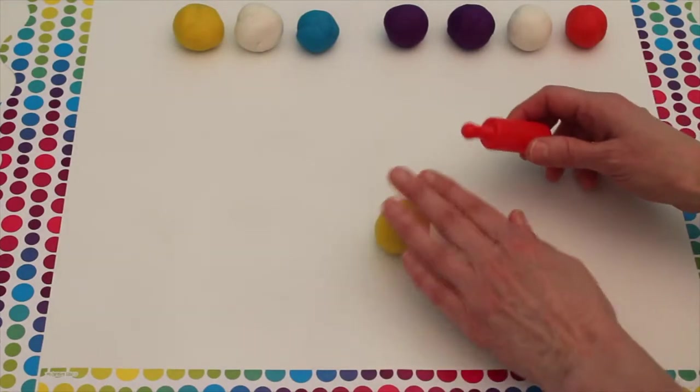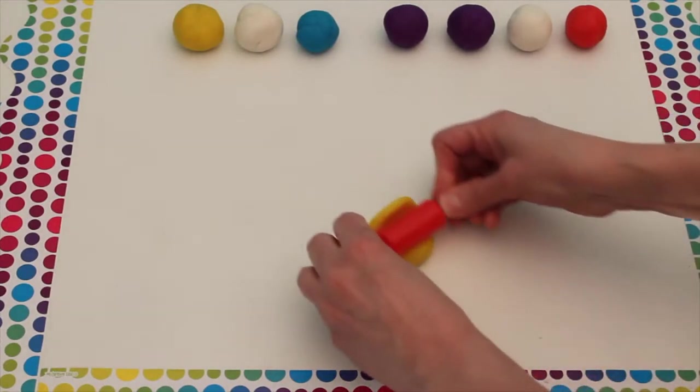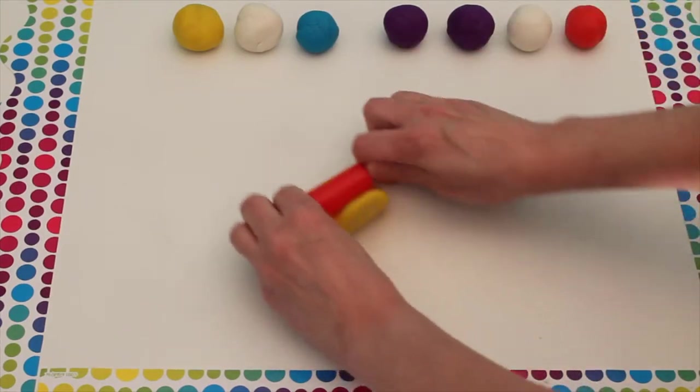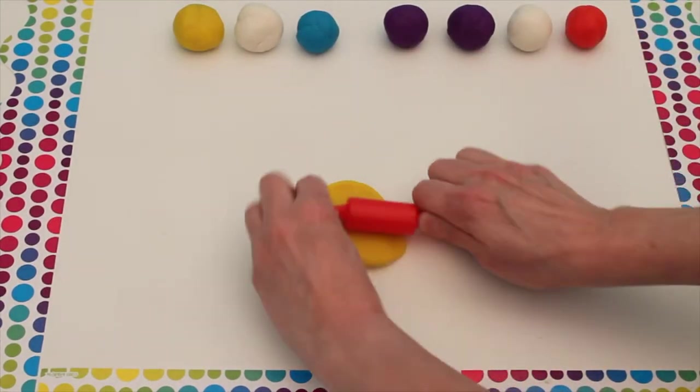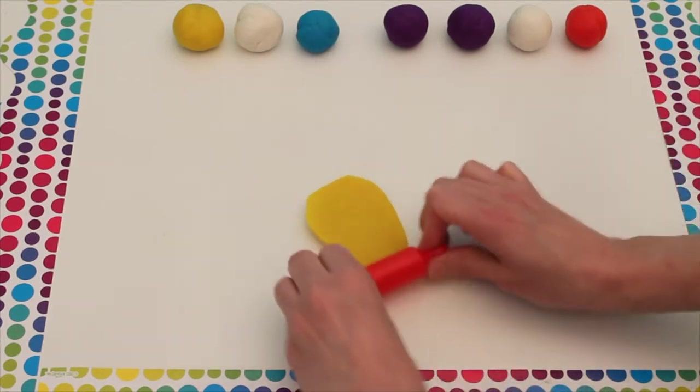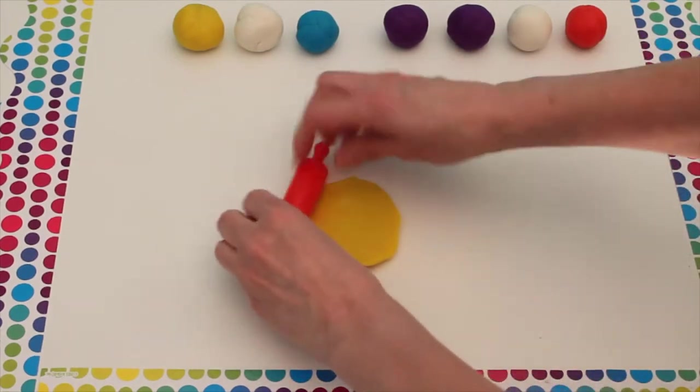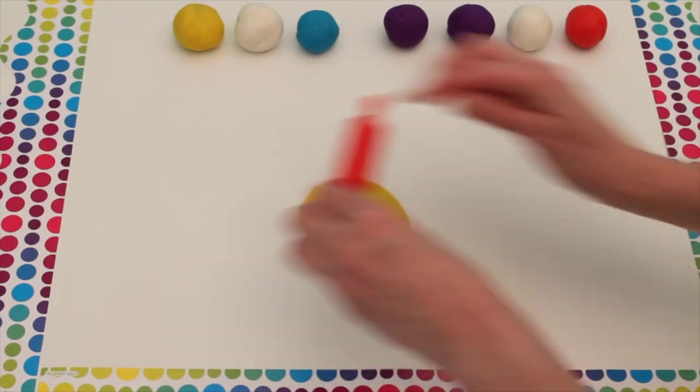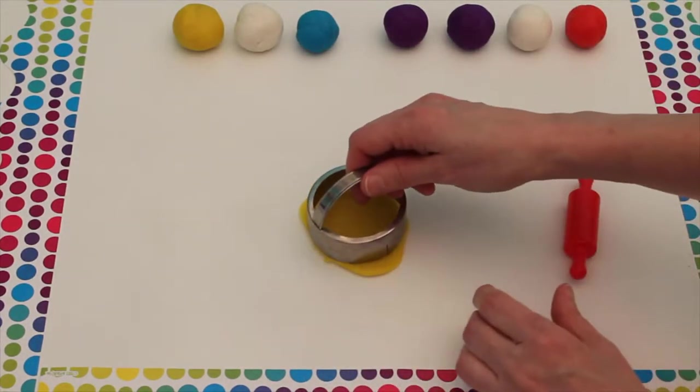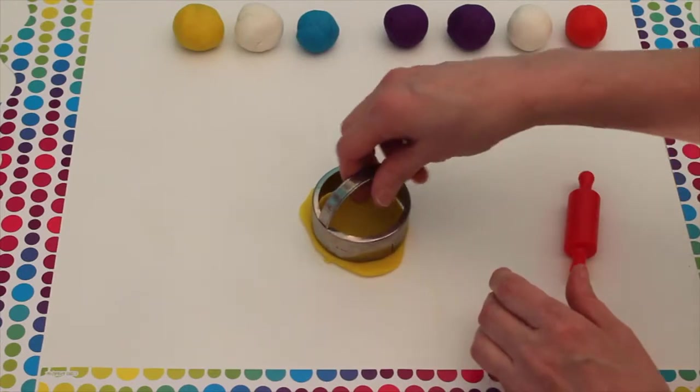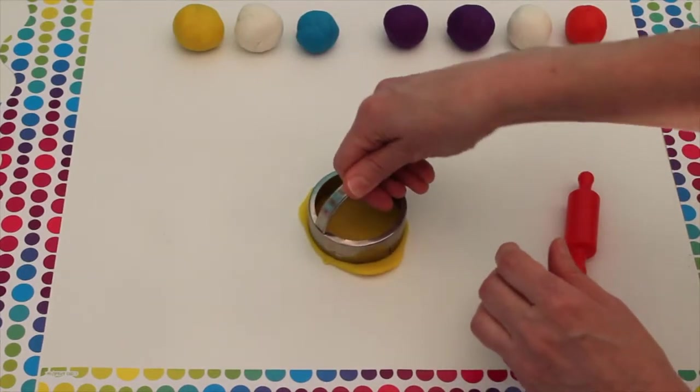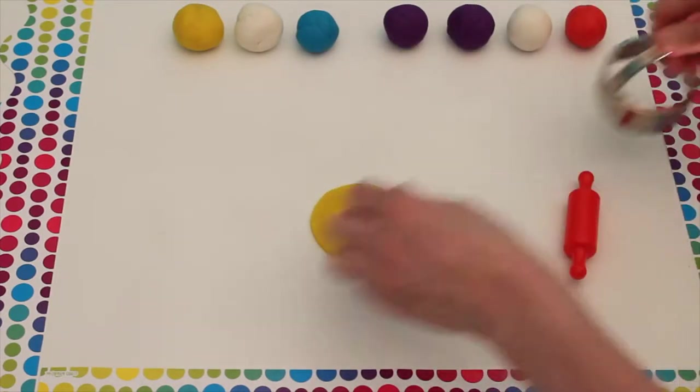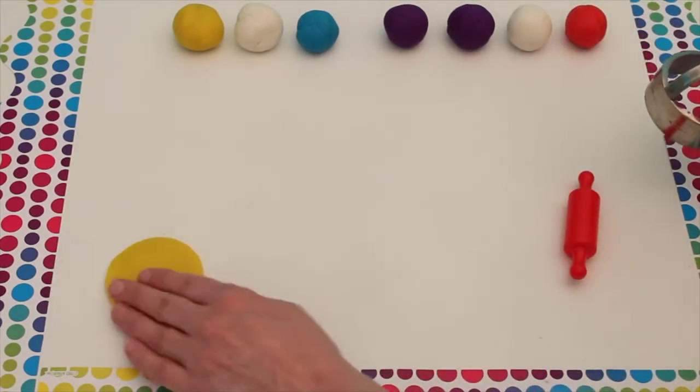First we're going to take this yellow Play-Doh, roll it out. We have to get it nice and flat. And then we're going to take our circle cookie cutter. There we have a nice yellow circle.